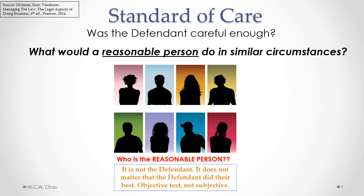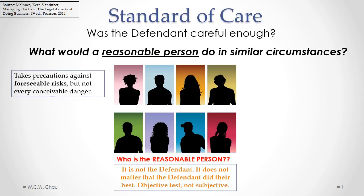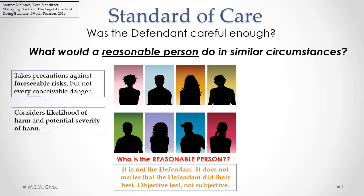In determining what a reasonable person would do in similar circumstances, courts have given us some clues and guidance. Courts have said that a reasonable person takes precautions against foreseeable risks, but not necessarily precautions against every conceivable danger. Another clue from previous court decisions is that a reasonable person considers the likelihood of harm and the potential severity of harm.